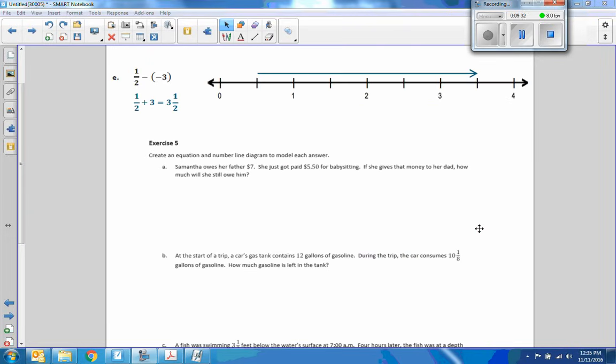Here is E. Negative one-half minus a negative three. Or one-half minus negative three is one-half plus three. So we start at a half. Over one, two, three. We're at three and a half.